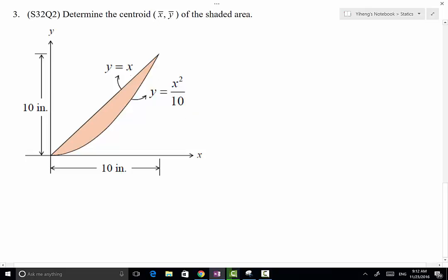So in order to determine x-bar and y-bar we're going to use the equation x-bar equals integration of x-tudor dA over integration of dA, and y-bar equals integration of y-tudor dA over integration of dA. We need to choose the differential element with area dA and its own centroid location with coordinates x-tudor and y-tudor.